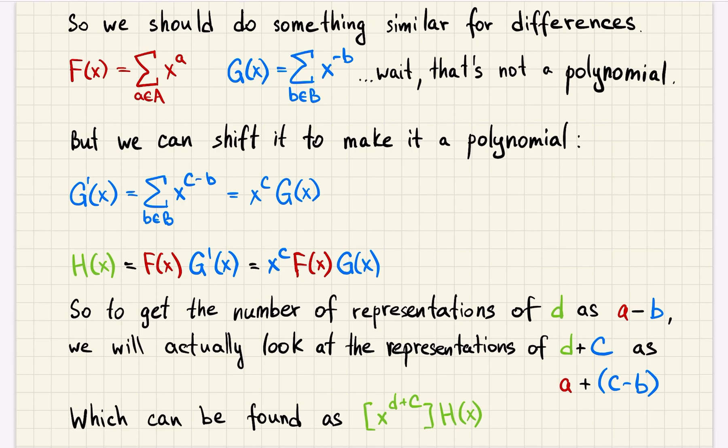But we can actually shift it to the right to make it polynomial. Let's define g prime. It's not a derivative, just another polynomial. So it's a sum of monomials x to the power of c minus b for every b from set b